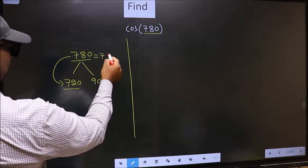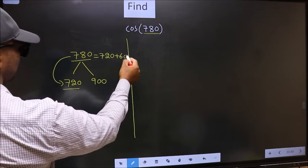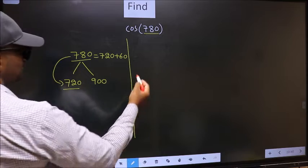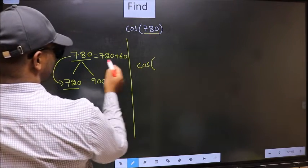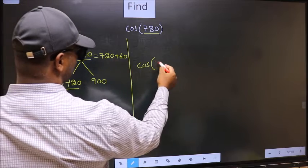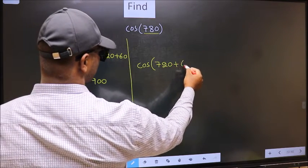Now we should write 720 + 60. So this will become cos, and in place of this we should write 720 + 60.